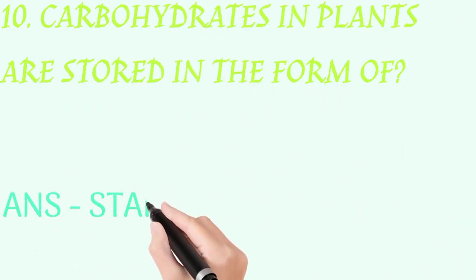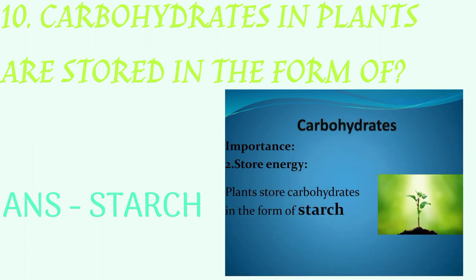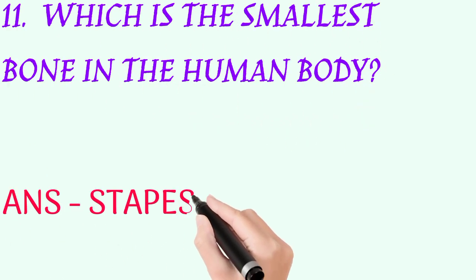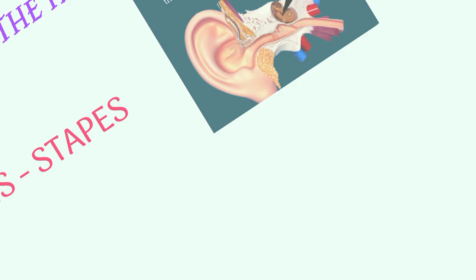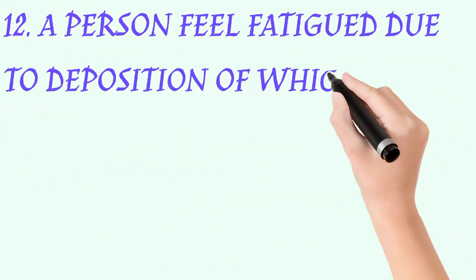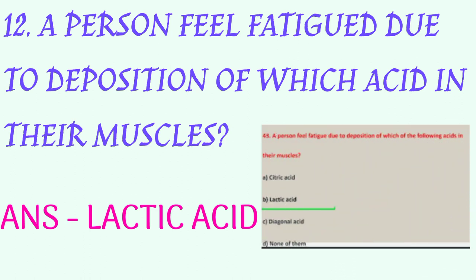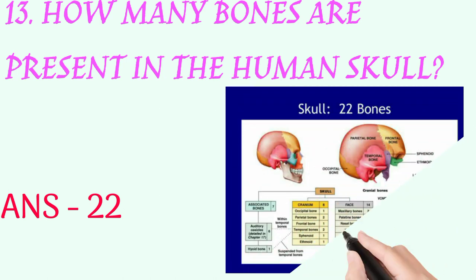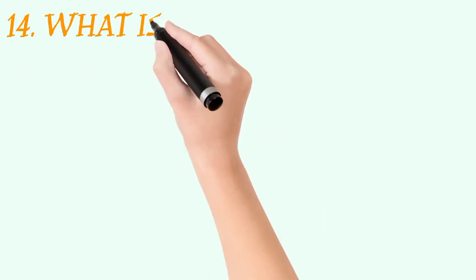Carbohydrates in plants are stored in the form of? Answer: starch. Which is the smallest bone in the human body? Answer: stapes. A person feels fatigue due to deposition of which acid in their muscles? Answer: lactic acid. How many bones are present in the human skull? Answer: 22.